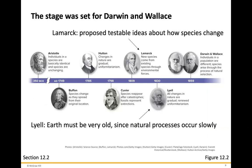The stage was set for Darwin and Wallace. Lamarck proposed testable ideas about how species can change. He essentially stated that new species will come from existing species through environmental forces — due to changes in the environment, that's where you'll see these changes and the pressures that lead to the ability to adapt.